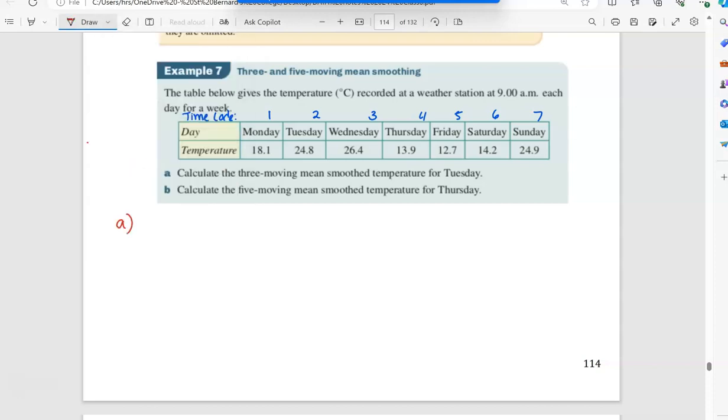The first question says calculate the three moving mean smooth temperature for Tuesday. So you've got three, you go to the day that they're talking about - Tuesday. You want to get the three values including Tuesday around it. So you'd pick one below it and one above it. So 18.1 plus 24.8 plus 26.4, divide it by three, and then I get 23.1. So this is the smooth value for Tuesday.